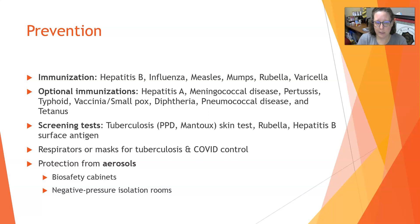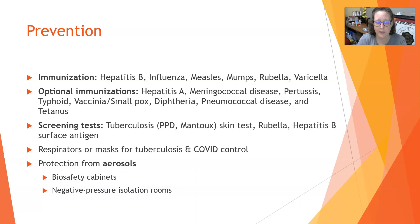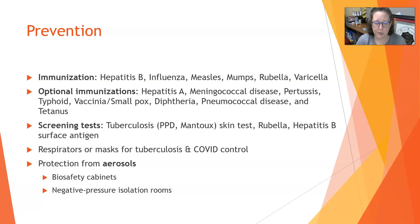Screening tests done yearly by most healthcare facilities include the TB skin test, also known as the PPD or Mantoux skin test. You can also be screened for rubella and hepatitis B surface antigen. You should wear respirators or masks when dealing with known tuberculosis or COVID-positive patients to protect your airway. To protect from aerosols, work under biosafety cabinets with proper airflow to move aerosols away from you, and patients with airborne pathogens should be placed in negative pressure isolation rooms.